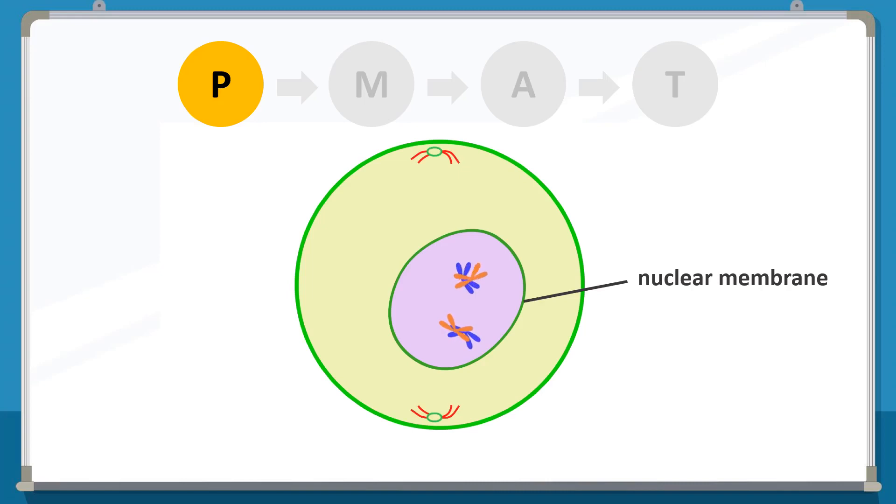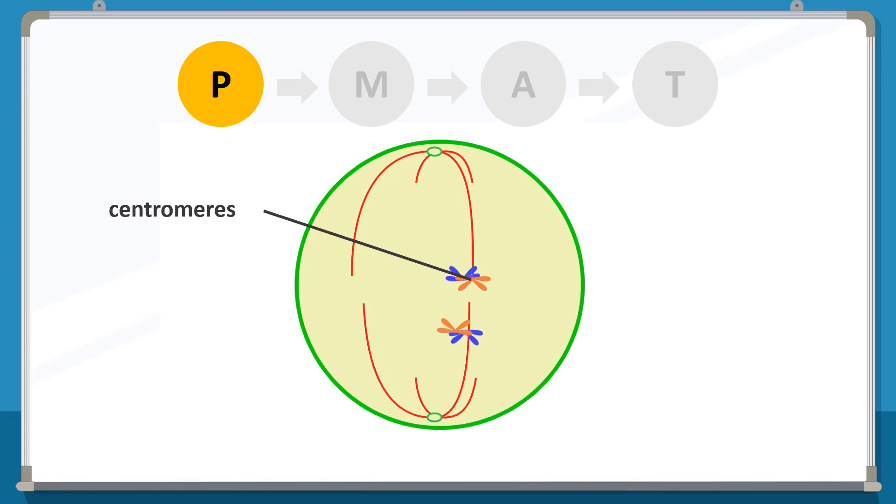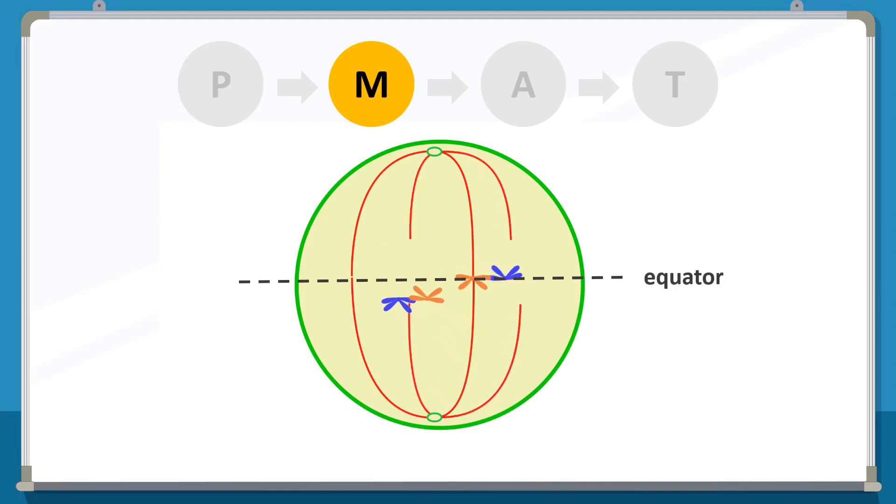The spindle fibers elongate to attach with each chromatid at the centromere. Next comes metaphase. During this phase, the sister chromatids align at the equator or the center of the cell, so both chromatids face the opposite ends of the cell.